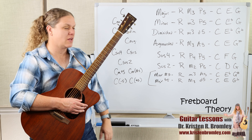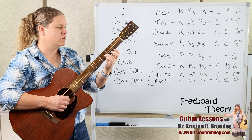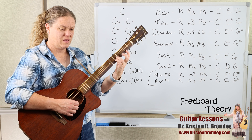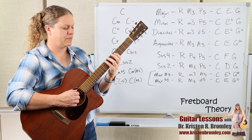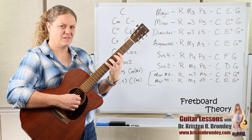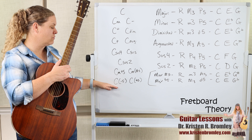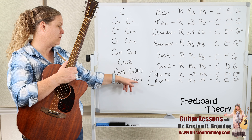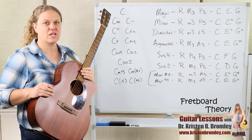The last chord type here is a major chord with a diminished fifth — root, major third, and diminished fifth. In the key of C, that's C, E, and G flat. The chord symbol has the root and then something telling us it's a flatted fifth — a minus five or flat five. Those are all the triad chord types — our three-note shapes.